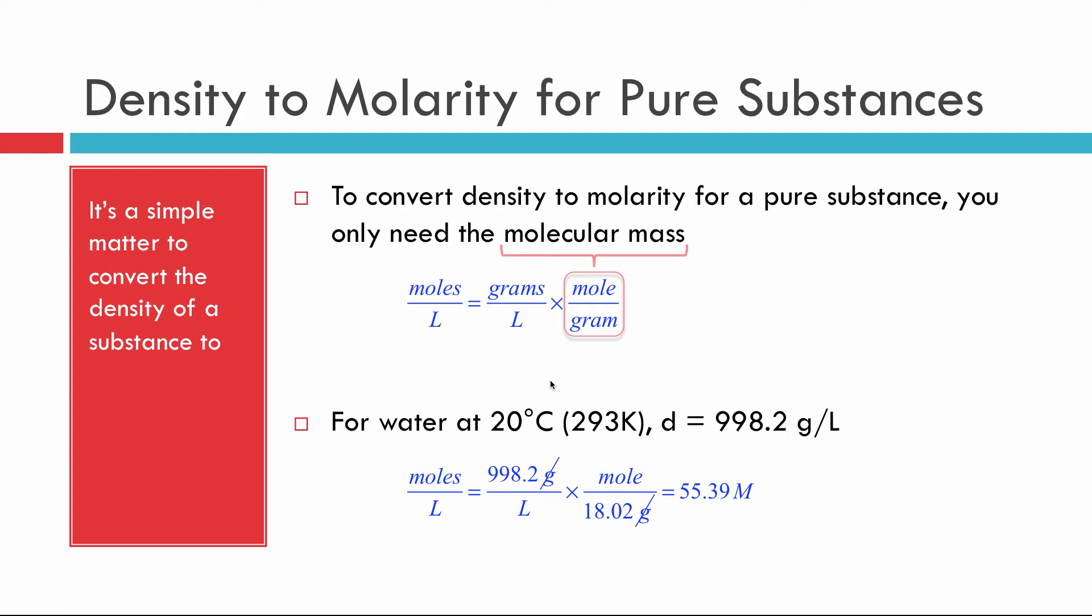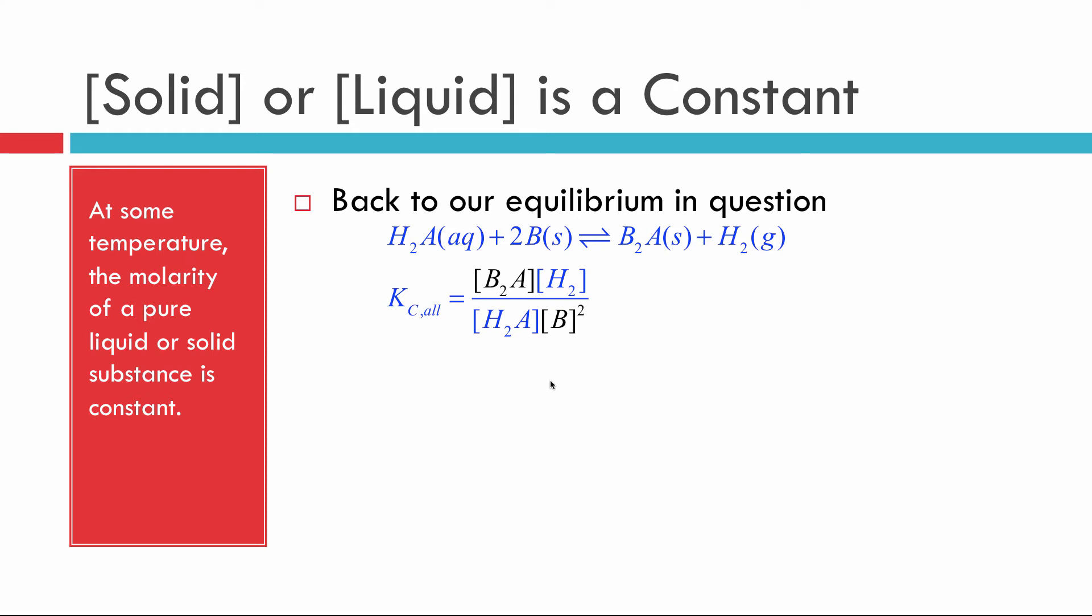So that means the concentrations of solids and liquids are constant. All right. So if that's the case, we can go back to our equilibrium expression and highlight our two solids. There's our reactant solid B. Here's our product solid B2A.